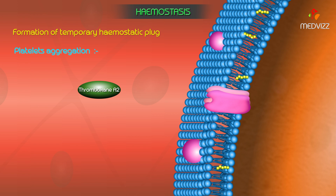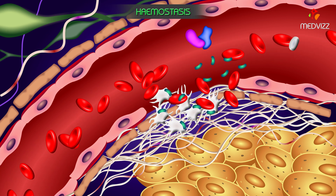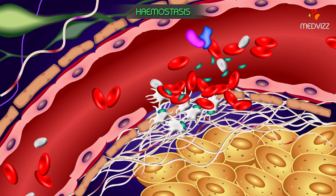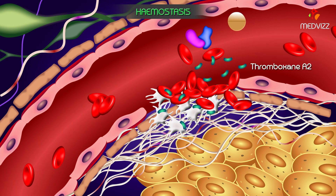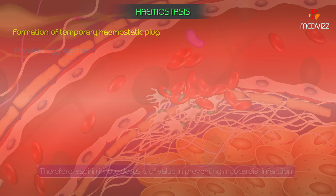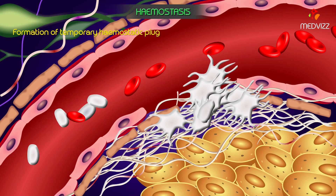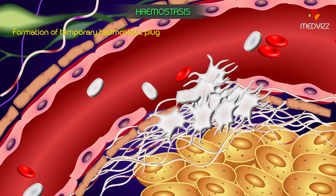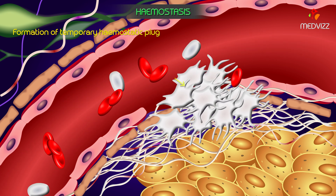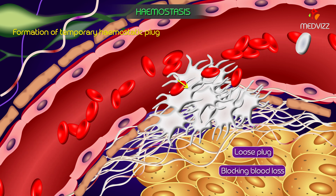An important point to note is that aspirin prevents platelet aggregation by inhibiting the formation of thromboxane A2. Therefore, aspirin in low doses is of value in preventing myocardial infarction. The platelet adherence and aggregation ultimately lead to the formation of a platelet plug, which at first is a fairly loose plug but is successful in blocking blood loss if the vascular opening is small.